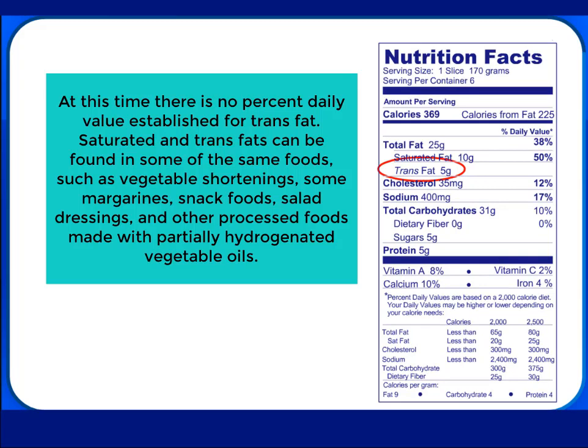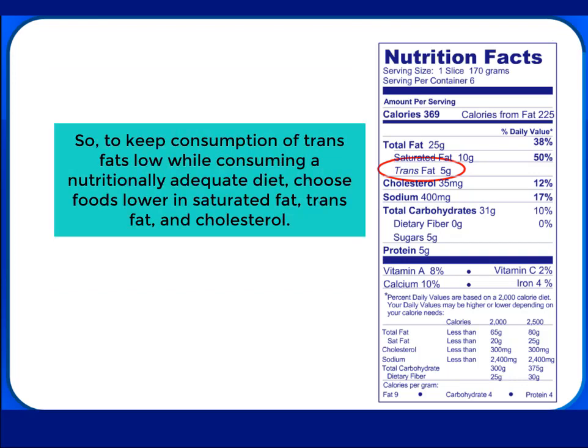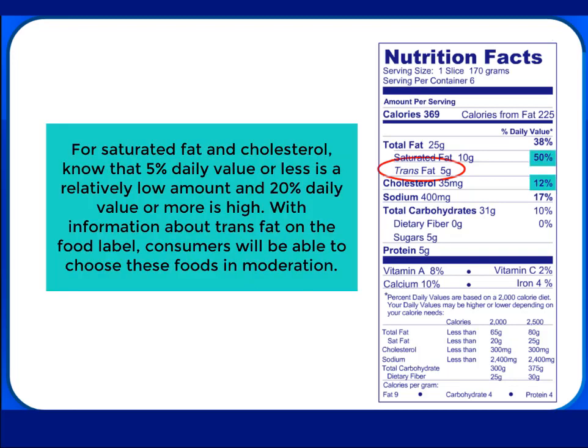At this time, there is no percent daily value established for trans fat. Saturated and trans fats can be found in some of the same foods, such as vegetable shortenings, some margarines, snack foods, salad dressings, and other processed foods made with partially hydrogenated vegetable oil. To keep consumption of trans fats low while consuming a nutritionally adequate diet, choose foods lower in saturated fat, trans fat, and cholesterol. For saturated fat and cholesterol, know that 5% daily value or less is a relatively low amount, and 20% daily value or more is high. With information about trans fat on the food label, consumers will be able to choose these foods in moderation.